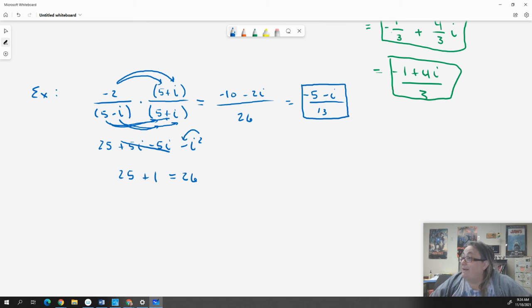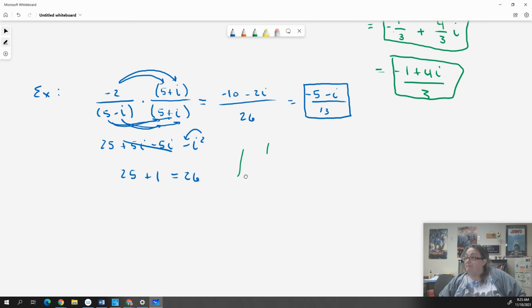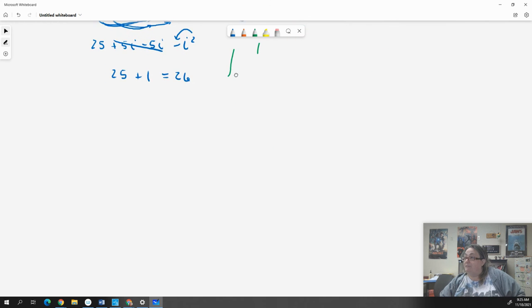Sometimes you're going to have a complex number over a complex number and you're going to have to distribute both of them out. It's not always going to be this easy. But you guys are amazing and I know that you can handle it better than I can handle this new whiteboard change. It's absolutely killing me.